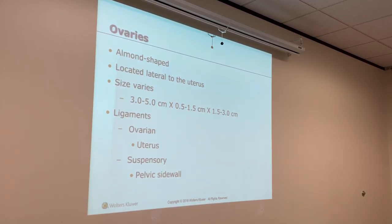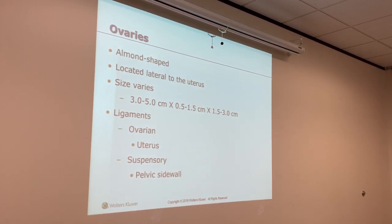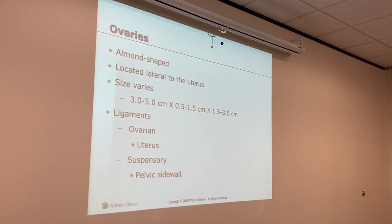The ovary will have anechoic structures in them, and those are the follicles. Because of the hormones from the anterior pituitary gland coming from the hypothalamus, our body puts out follicles. But the body has to produce follicle-stimulating hormone — FSH — for that to happen. The follicles are usually going to be anechoic, but not always, because they can bleed and be homogeneous.